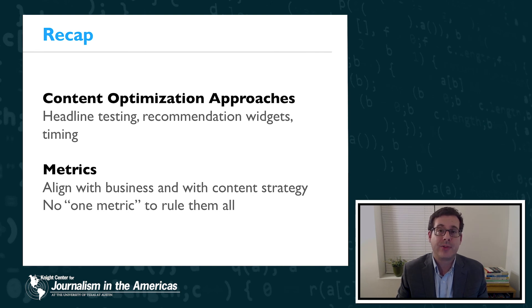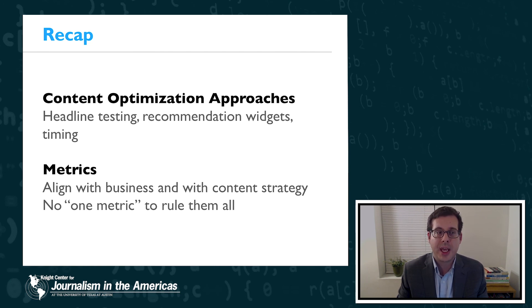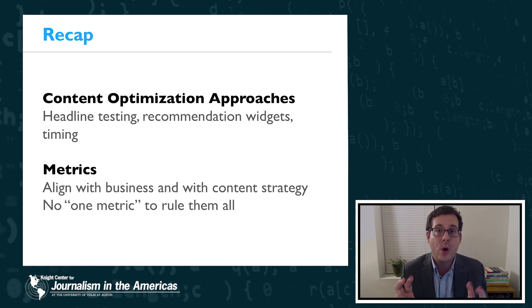Finally, a brief recap for today's video lecture. I've given you an overview of some of the ways news organizations are optimizing content algorithmically, including headline testing, use of recommendation widgets on article pages, and optimizing the timing of publication to different channels online. Secondly, I hope I've given you ideas for how to think about metrics with respect to content optimization algorithms — there's no one metric to rule them all, and you need to optimize the right metric for your content and business strategy. I hope you'll also tune into my video interview with Tamar Charney from NPR this week, where we'll talk more about algorithmic curation and how to do that in an editorially responsible way.